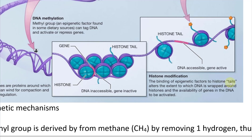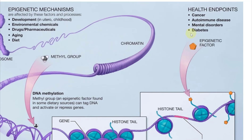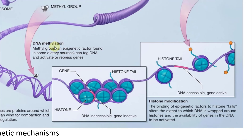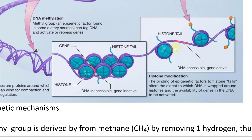The binding of epigenetic factors to histone tails alters the extent to which DNA is wrapped around histones and the availability of genes to be activated or transcribed. When tails shoot outward and an epigenetic factor — like a methyl group — connects to them, the chromatin can't compact as tightly. So a gene that was initially inaccessible becomes accessible and active — it can be transcribed.